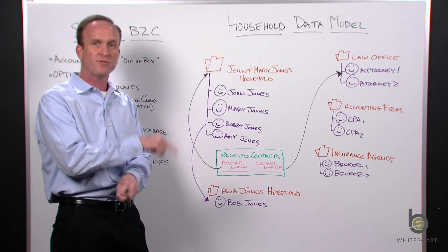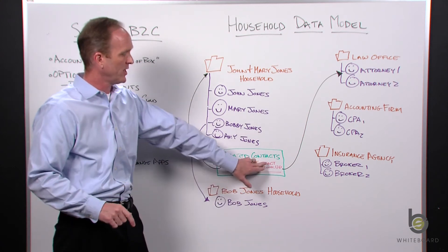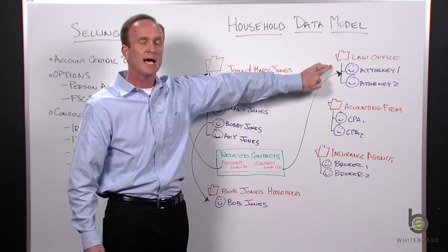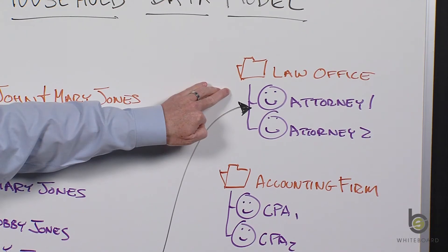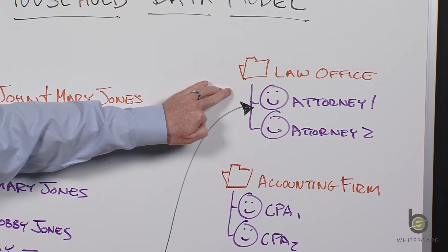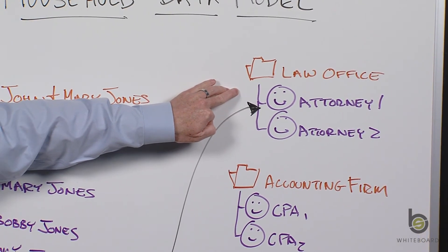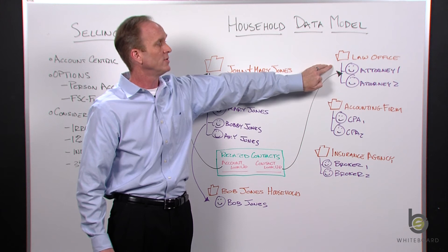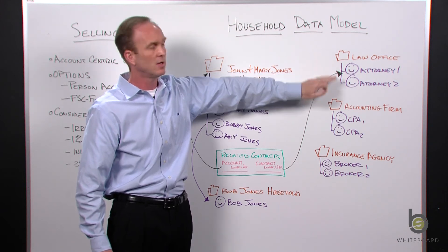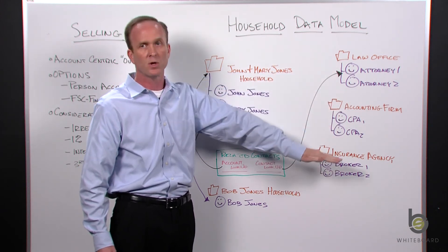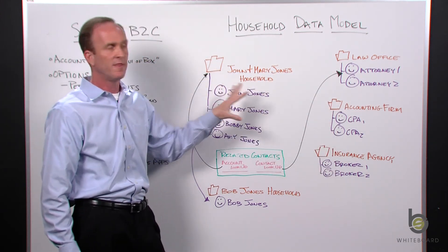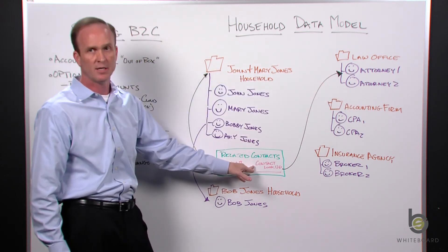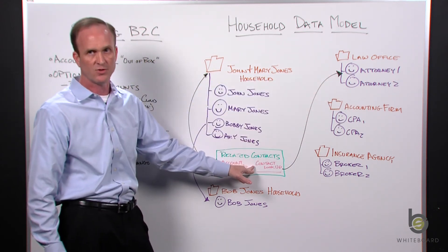The flip side of that data relationship: if we go to the attorney's contact record, any household related to that attorney will be visible as a related list underneath their record. So we can see all the households that attorney works with, because of this joint custom object.